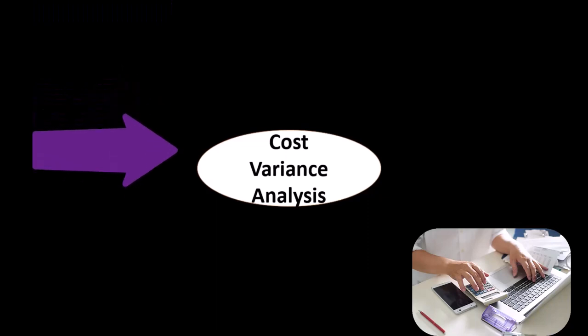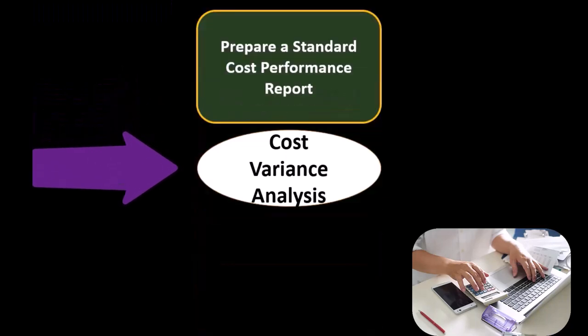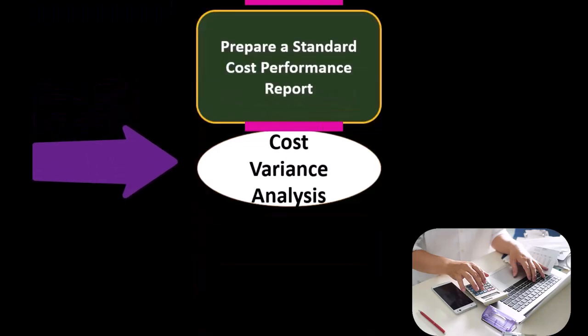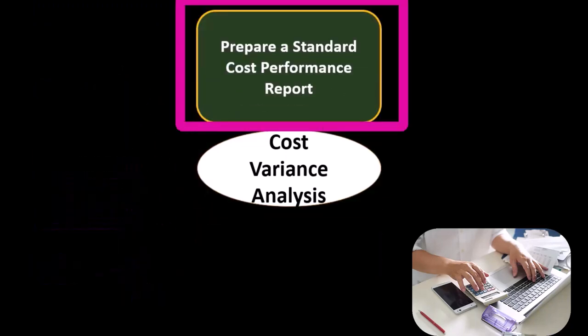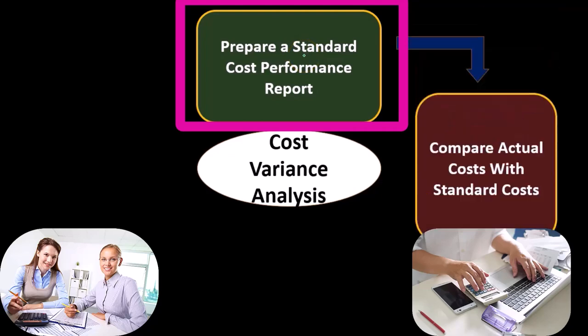We'll go through the cycle of the cost variance analysis. We'll have the preparation of the standard cost performance report — the standard, which you can think of as the expectations, similar to the budget, but with the cost variance.